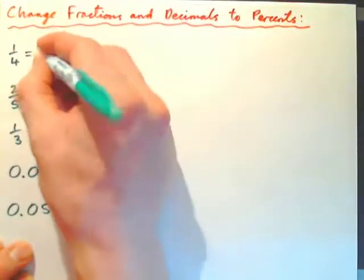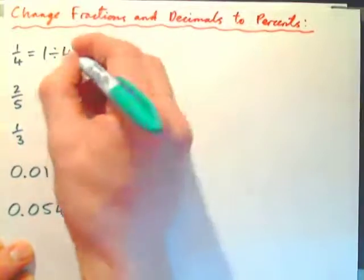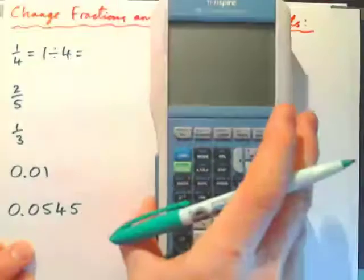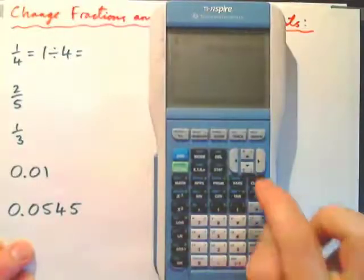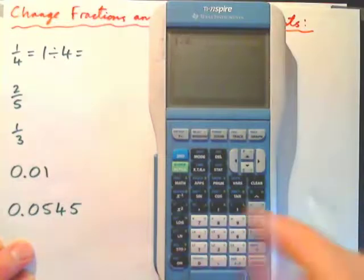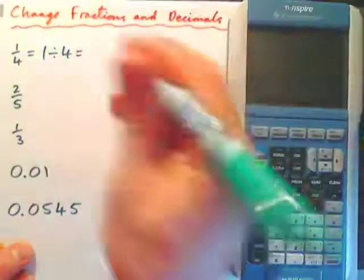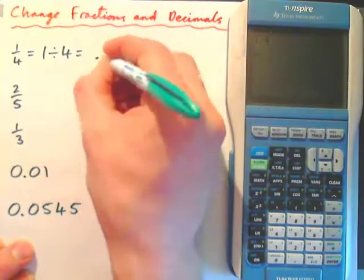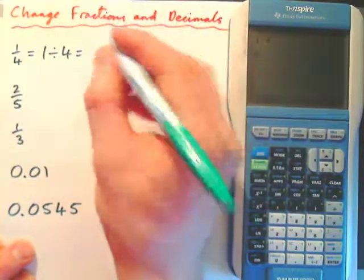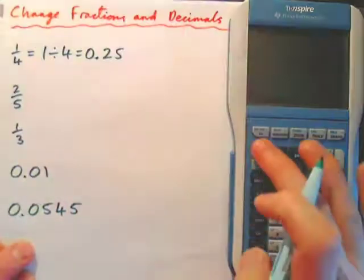One quarter we need to know is 1 divided by 4. So if I put that in the calculator, 1 divided by 4, that's 0.25, which is the same thing as 0.25, and I like to write the zero in there.